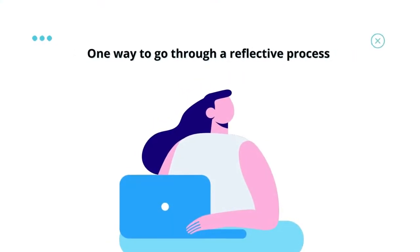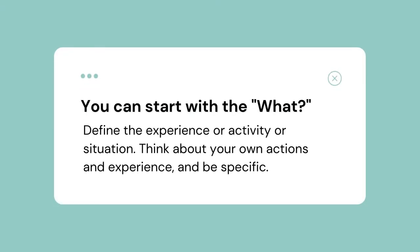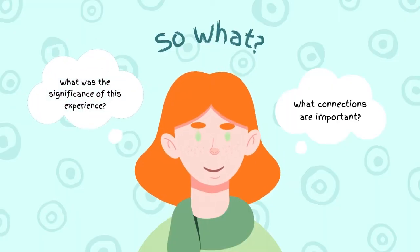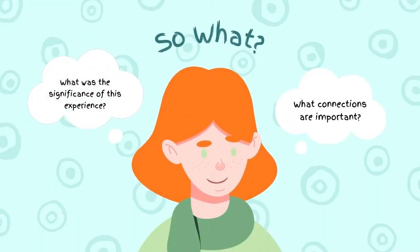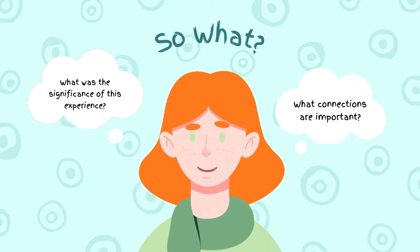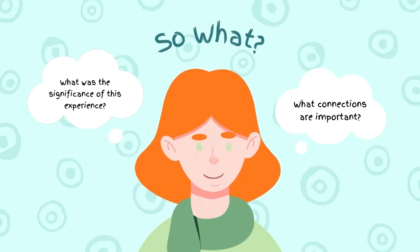One way to go through a reflective process is to follow a What, So What, Now What framework. You can first start by defining the experience, activity, or situation. Think about your own actions and experience, and be specific. Then you can ask yourself: what was the significance of this experience — for example, to you personally or to the course material? What connections are important? This is the So What piece.